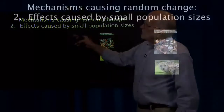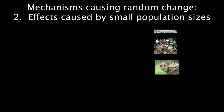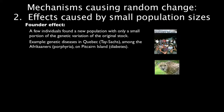The second mechanism causing random change involves effects of small population sizes. Consider the Pitcairn Islanders, other founder populations in humans, and cheetahs. The founder effect occurs when just a few individuals found a new population with only a small portion of the genetic variation from the original stock. A mutation for a genetic disease can suddenly occur at high frequency because one of the few founders carries it. Examples include genetic diseases in Quebec, Tay-Sachs among the Afrikaners (porphyria), and type 1 diabetes on Pitcairn Island.